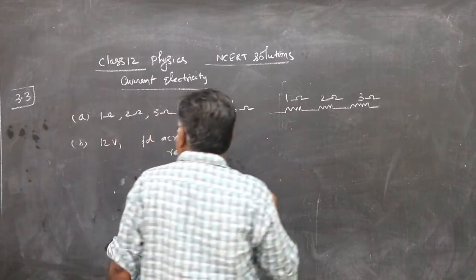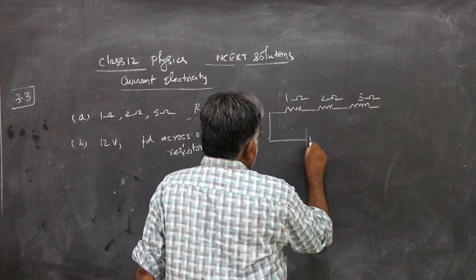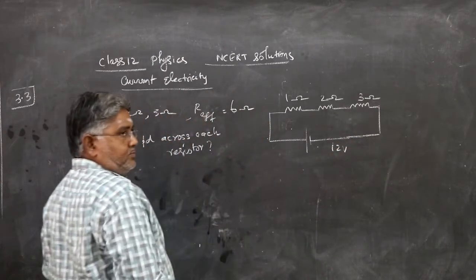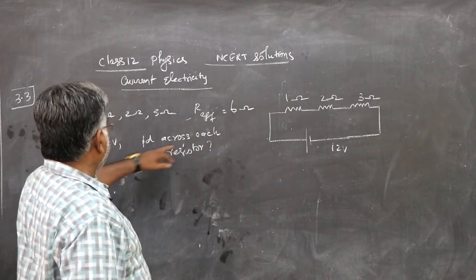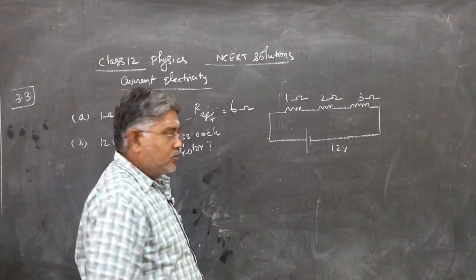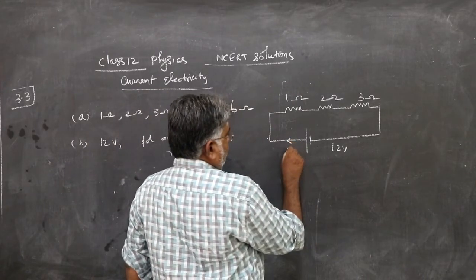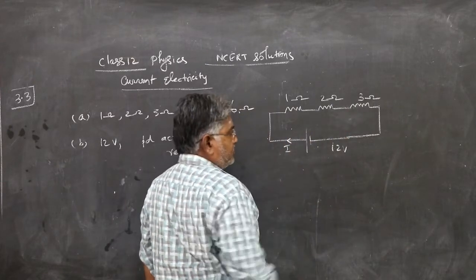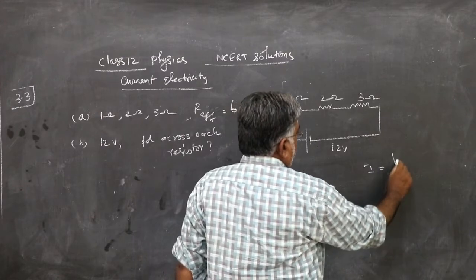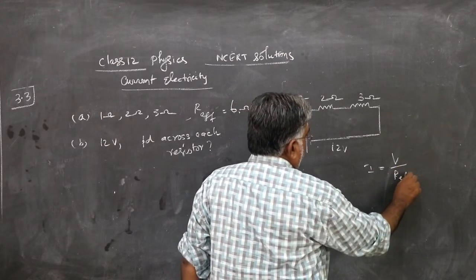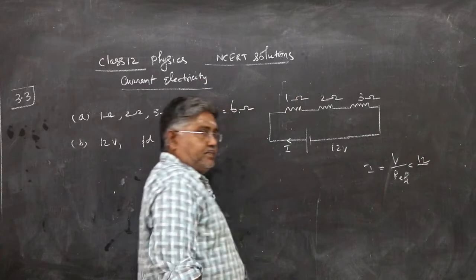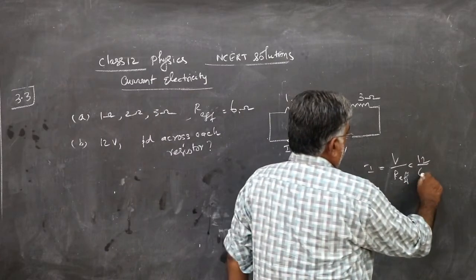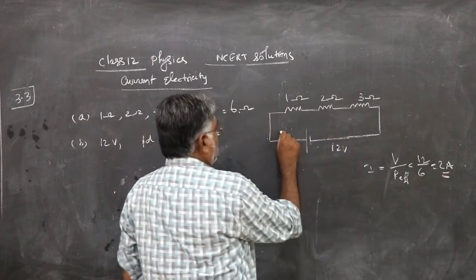In the second subdivision, it is connected to a battery, 12 volt. What is the PD across each resistance? So, first what you do? Find I from the battery. You know effective resistance is 6 ohm. I is V by R effective. V is 12, effective resistance 6 ohm. So, current is 2 ampere. So, 2 ampere current is coming.